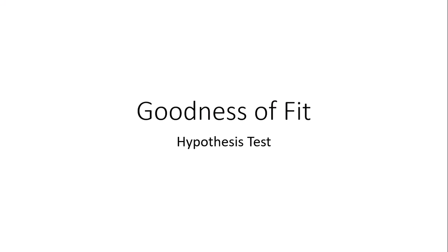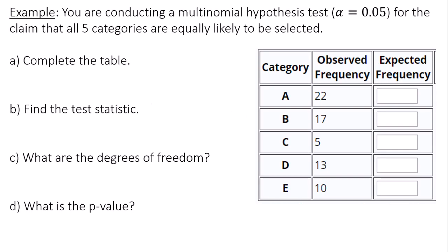Hello, this is a video about conducting a goodness of fit hypothesis test. You're conducting a multinomial hypothesis test with a significance level of 0.05 for the claim that all five categories are equally likely to be selected.